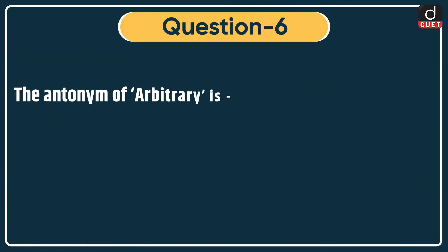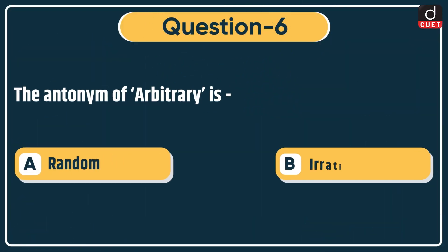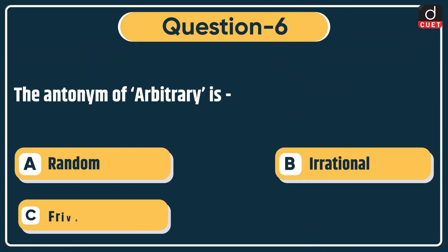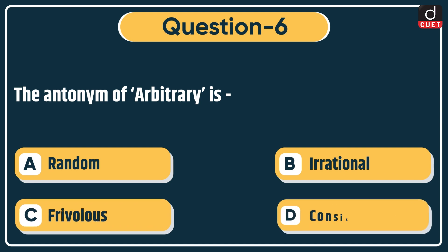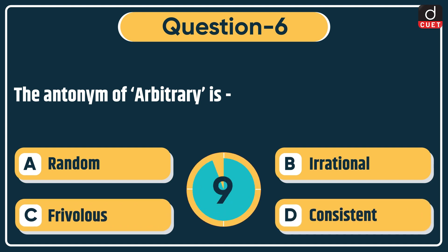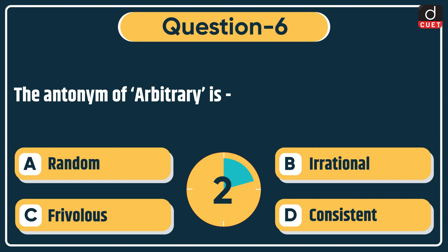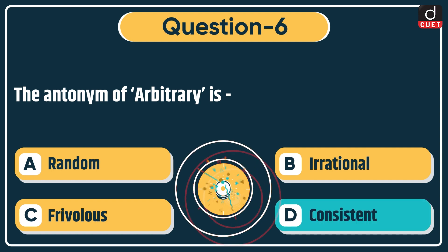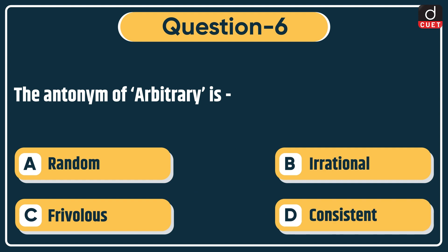Next question: the antonym of 'arbitrary' is — Random, Irrational, Frivolous, or Consistent. The correct answer is option D: Consistent.